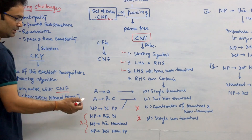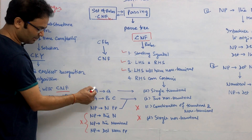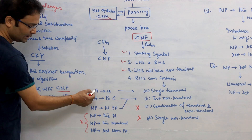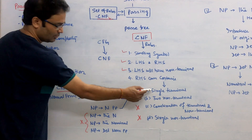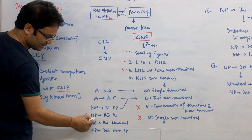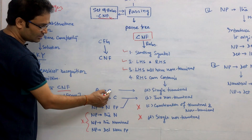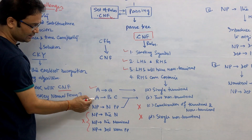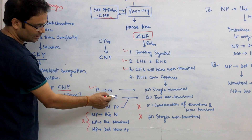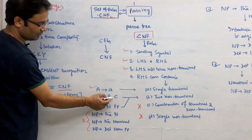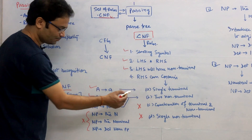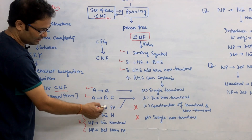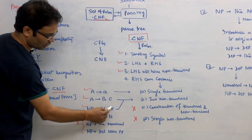For better understanding: capital letters are non-terminals and small letters are terminals. If you have a rule where the LHS is a non-terminal and the RHS is one single terminal, that is okay — it follows CNF rules. Second, if A goes to B C where both B and C are non-terminals, that is also okay. Third, noun phrase goes to noun and prepositional phrase — both are non-terminals, so this is also valid according to CNF.